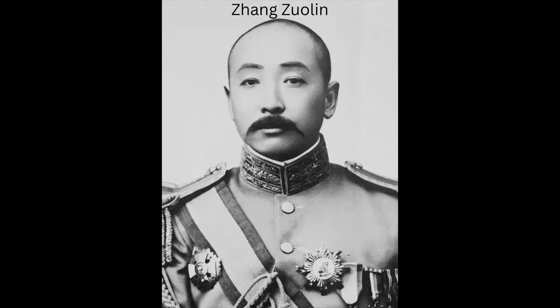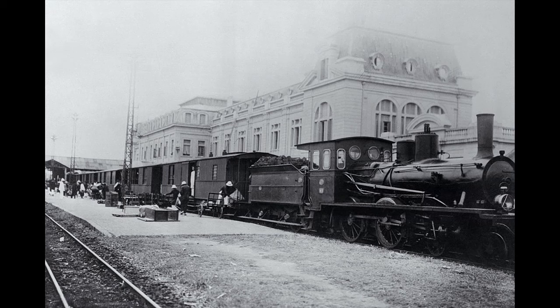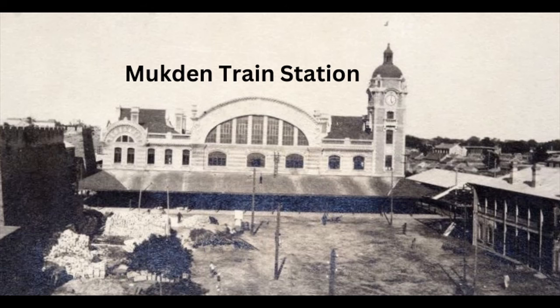In early June 1928, Zhang Zuolin, the Manchurian warlord, left Beijing for Manchuria since he had failed to stop the Northern Expedition. He bid farewell to the capital, seen off by an honor guard, and boarded a train heading northeast. As it crossed a Japanese-controlled bridge in Manchuria, a massive explosion rocked the train. Zhang Zuolin, the Manchurian general, had been assassinated by the Japanese.